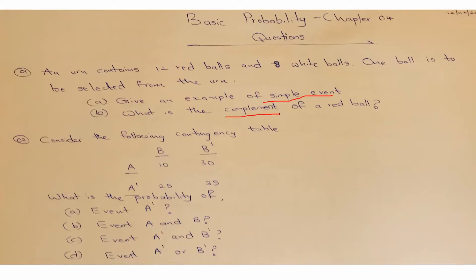The second question asks you to consider the following contingency table. You are given two events A and B, and also the complement of B and complement of A. The figures pertain to events A and B. They are asking: what is the probability of the complement of A? Part B: probability of event A and B? Part C: probability of complement of A and complement of B? Part D: probability of event A, complement of A, or complement of B?